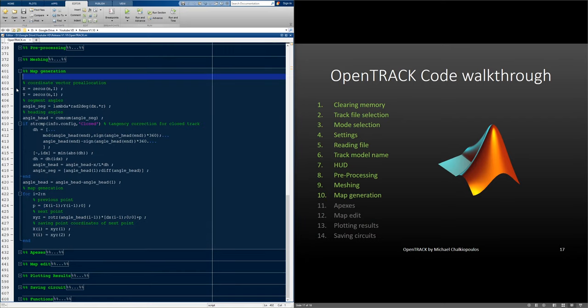Now, to create the map, we pre-allocate in memory the x and y vectors, get the segment angles and the heading angles, and then we proceed to the tangency correction for the closed track if needed. So, if the track is closed, we get the two values for the heading angle error, and then choose the minimum absolute value.